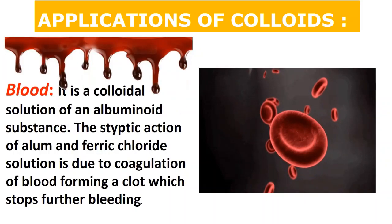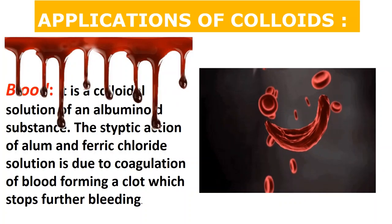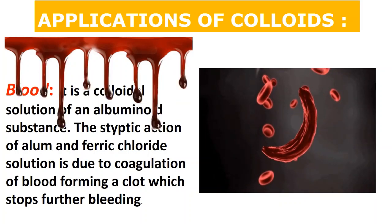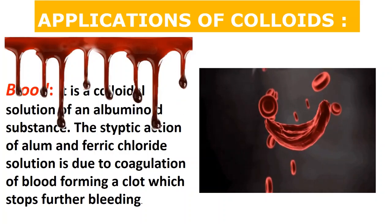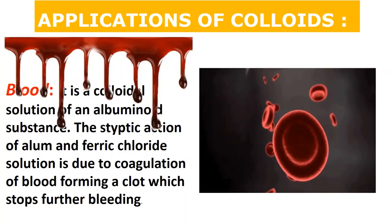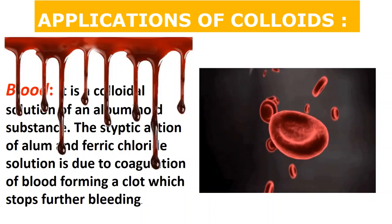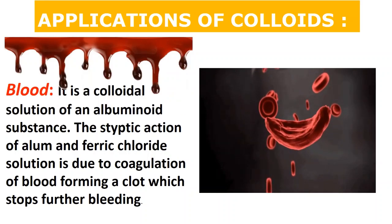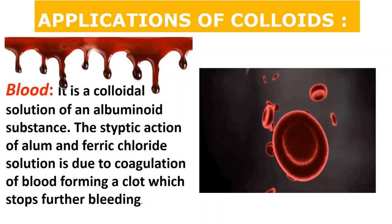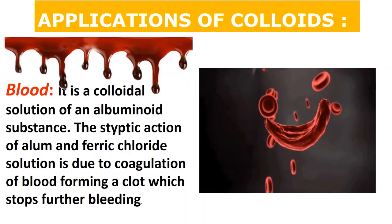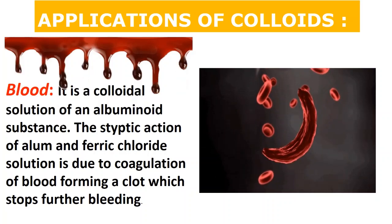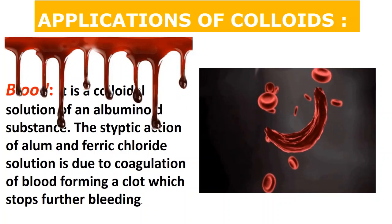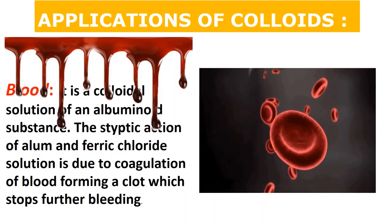Blood is also a colloidal solution of an albuminoid substance. When a cut occurs, alum or freshly prepared FeCl3 solution is applied. FeCl3 coagulates the blood particles — opposite to peptization — causing coagulation so that the blood clots quickly. So blood is a colloidal example. If bleeding occurs, applying freshly prepared FeCl3, Dettol, or Savlon helps coagulate the blood and stop the bleeding quickly.